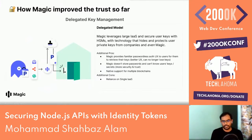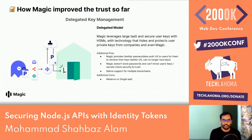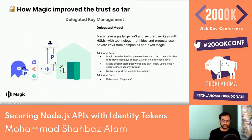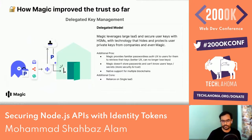The private keys are not seen by anyone — not even Magic. Additional pros include Magic providing a familiar passwordless auth UX for users to retrieve their keys. With better UX, users can no longer lose keys. Magic doesn't store passwords and can't know users' key secrets. It has native support for multiple blockchains. The one con is Magic relying on a single infrastructure-as-a-service, which is going to change very soon.